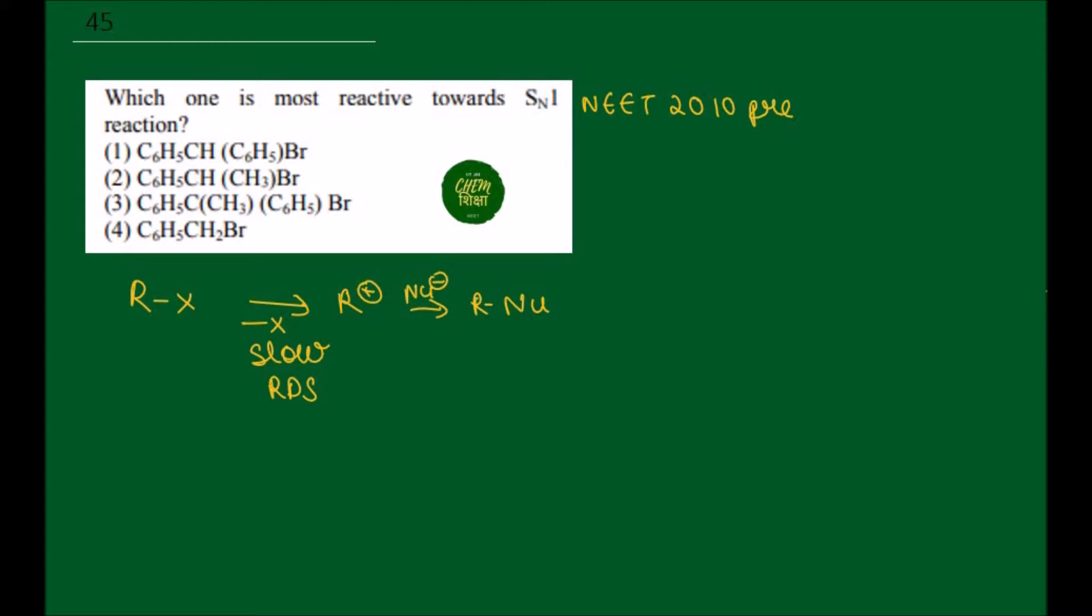Now, we're asked about the most reactive towards SN1 reaction. If we have a rate determining step, then we know that the reactivity of the SN1 reaction depends on the stability of the carbocation.